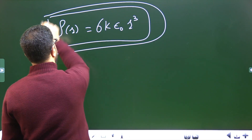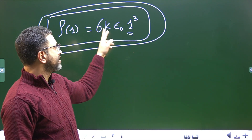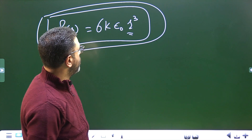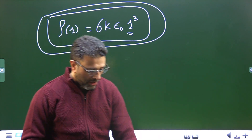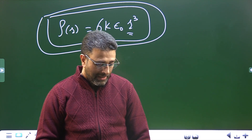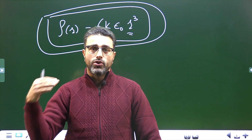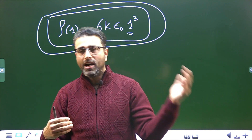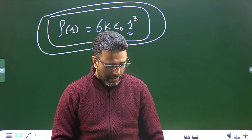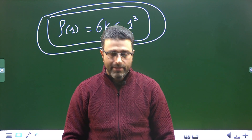So the charge density of the spherical charge distribution is ρ(r) = 6kε₀r³. It is only a function of r, as expected. That is Problem 55, and that is all I'll be doing with Chapter 23 on Gauss's Law. The additional problems I'll leave for you, as has been our practice in Chapters 21 and 22. Next we'll be taking Chapter 24 on electric potential. All the best — that will do for this session.